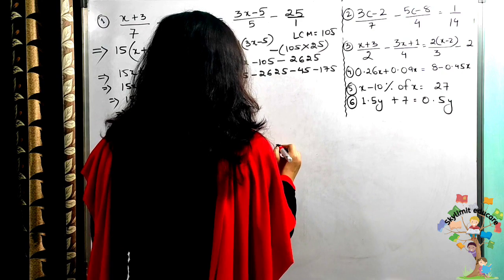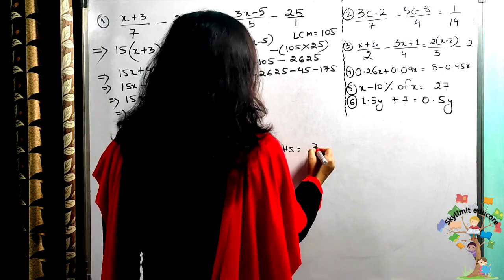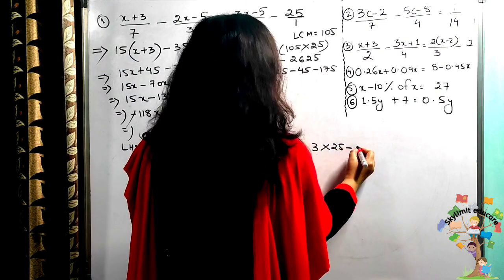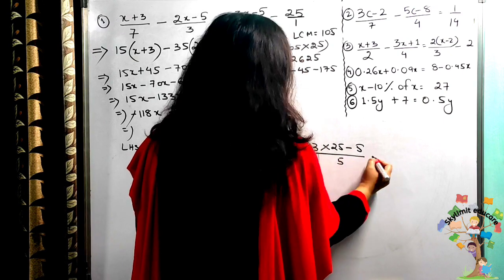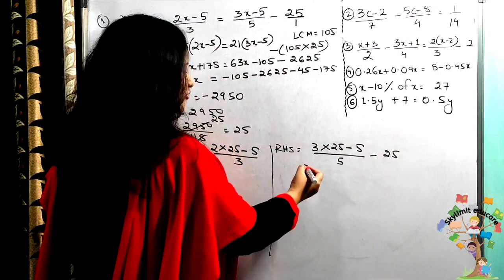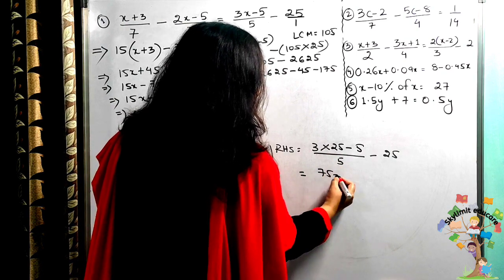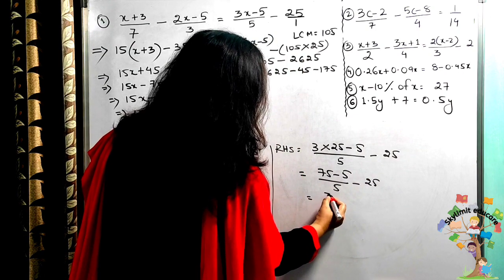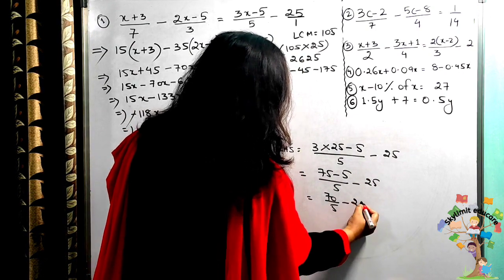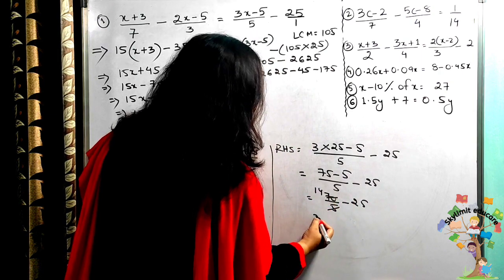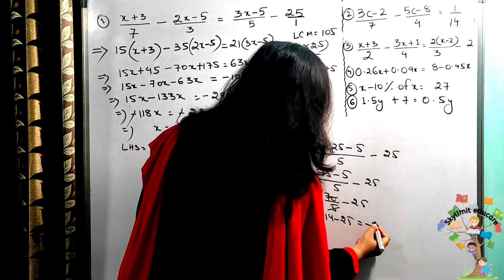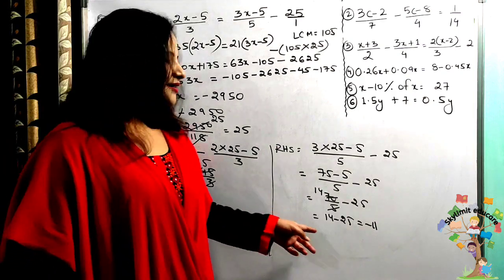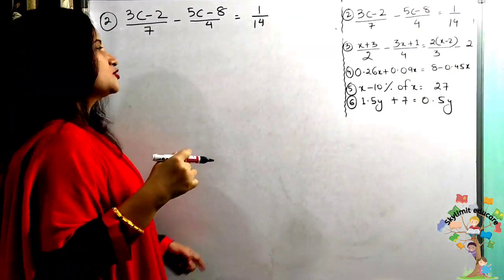Now checking the right hand side: (3x − 5)/5 − 25. Substituting x = 25: (75 − 5)/5 − 25 = 70/5 − 25 = 14 − 25 = −11. Left hand side equals right hand side, so it is verified.